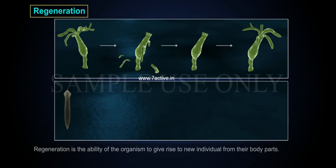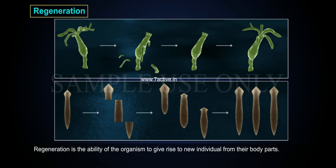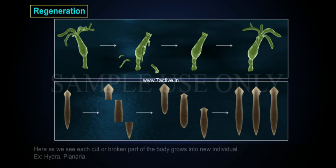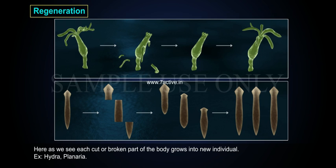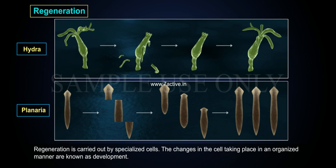Regeneration. Regeneration is the ability of an organism to give rise to a new individual from its body parts. Each cut or broken part of the body grows into a new individual. For example, hydra and planaria. Regeneration is carried out by specialized cells, and the organized changes taking place in the cell are known as development.